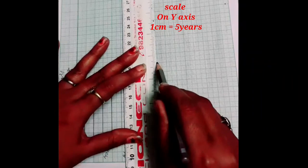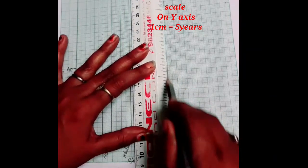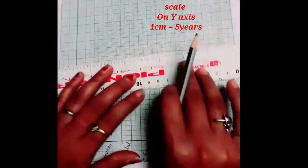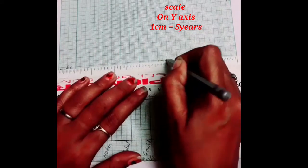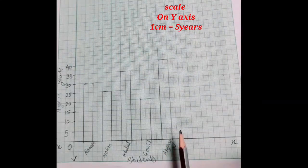The last one Akshay age is given 40 years. So 40 is here. Mark 40. Akshay age.